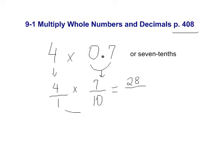You can see that this is top-heavy, so we need to change this into a mixed number. 10 goes into 28 two times, with a remainder of 8, and the denominator stays the same.